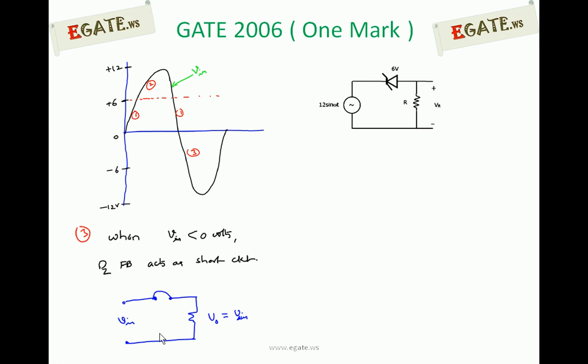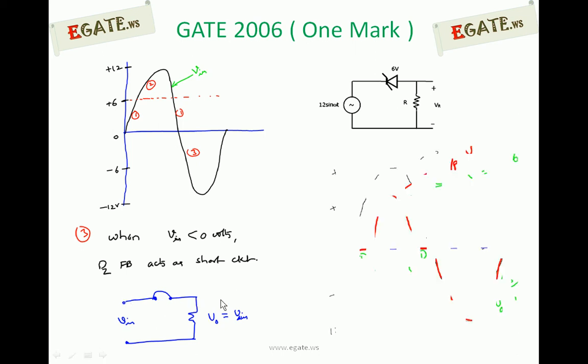Case 3: When V input is less than 0 — for all negative voltages — the diode is forward biased and acts as a short circuit. Whenever it acts as a short circuit, the output voltage is the same as the input voltage. So V0 equals V input.